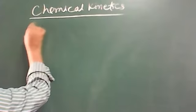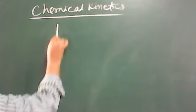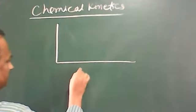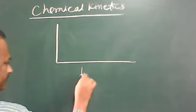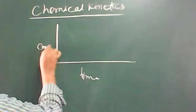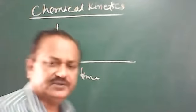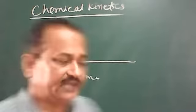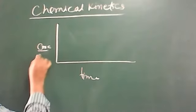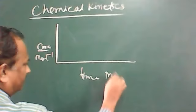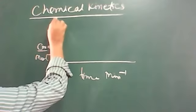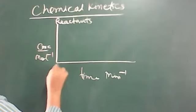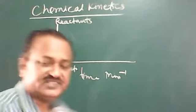First we have to see the graphical representation. On one axis there is time, and on the other axis there is the concentration of reactants as well as products. The concentration is in mole per liter and time is in per minute inverse. On one side we have the reactants, and on the other side we have the products.